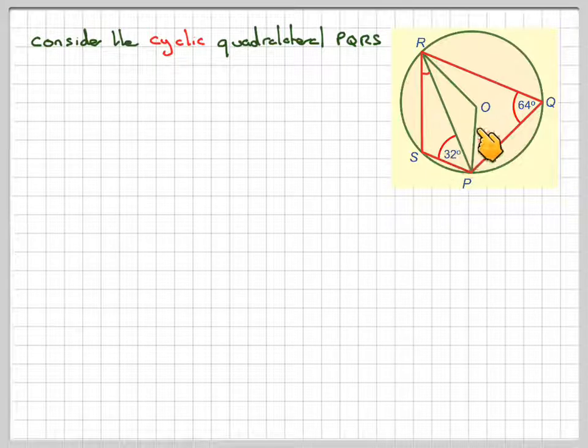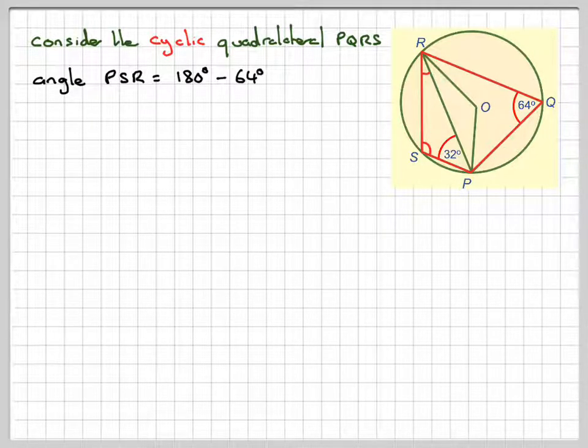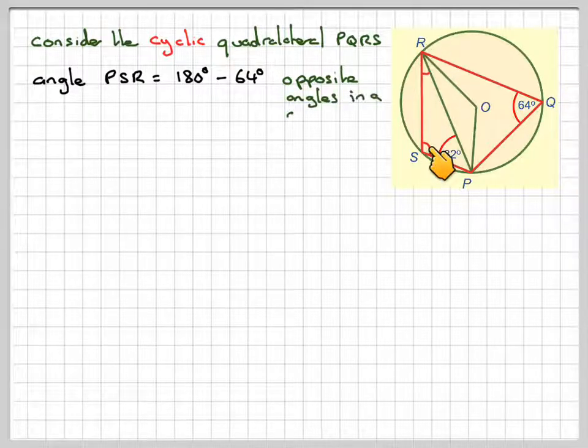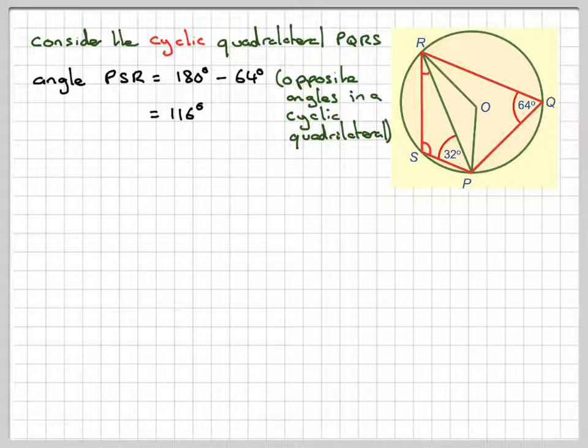Opposite angles of a cyclic quadrilateral add up to 180, so angle PSR, this one here, is going to be 180 minus 64, opposite angles in a cyclic quadrilateral. That gives me 116 degrees.